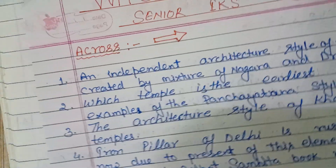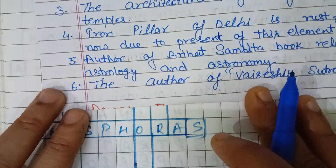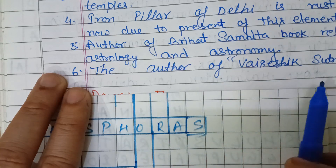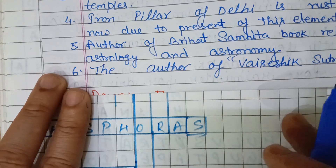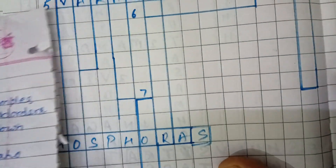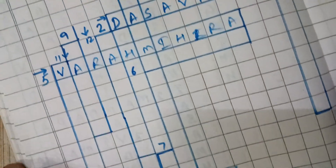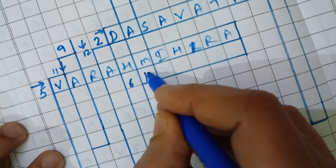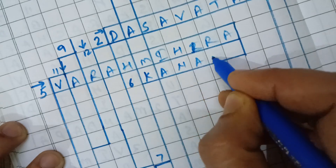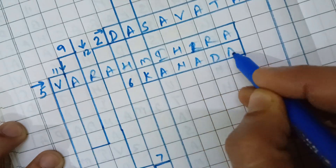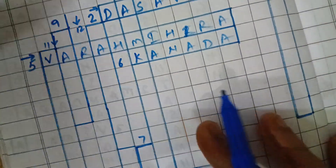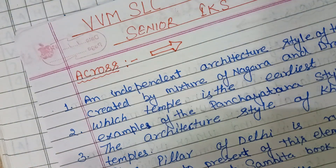Sixth question: who is the author of Vaisesika Sutra? The author of Vaisesika Sutra is Kanad — K-A-N-A-D-A. This is the answer for sixth across.